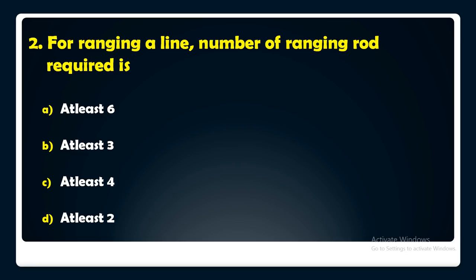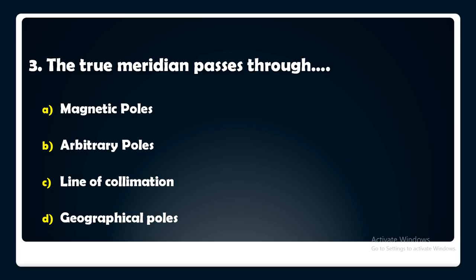The true meridian passes through — magnetic poles, arbitrary poles, line of collimation, or geographical poles. The answer is: the true meridian passes through geographical poles.